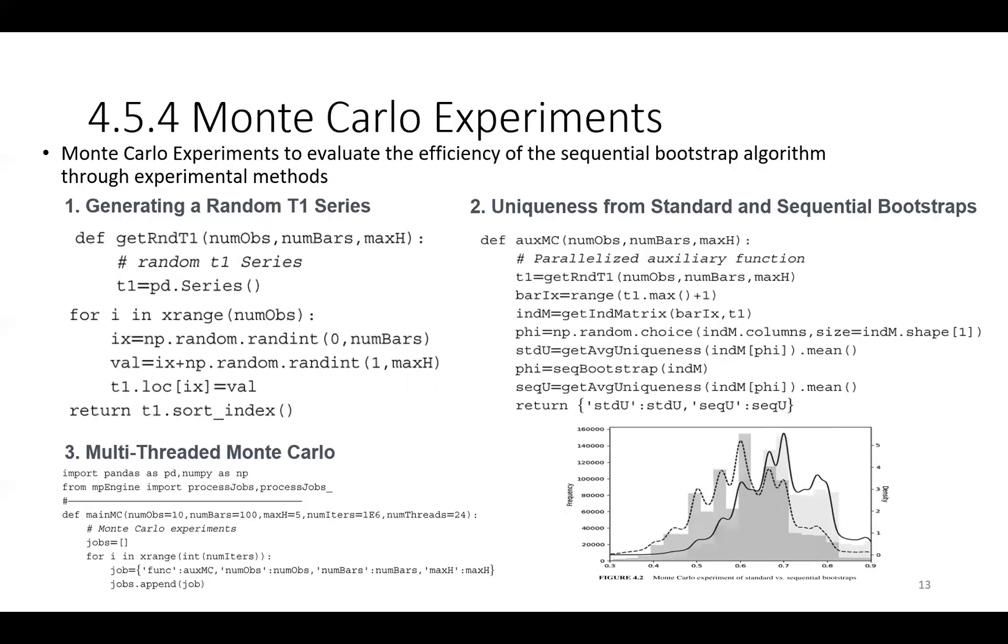Moving on, we can also carry on Monte Carlo experiments in order to evaluate the efficiency of the sequential bootstrap algorithm through experimental methods. The first step is generating a random T1 series, followed by computing the uniqueness from standard and sequential bootstraps and a multi-threaded Monte Carlo simulation. And on the bottom right, we can see the graph comparing Monte Carlo experiments of standard versus sequential bootstrap.